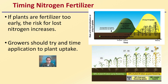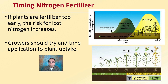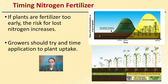To reduce the waste of nitrogen fertilizer, growers should work on the timing of fertilizer application. If plants are fertilized too early, the risk of lost nitrogen increases. Growers should try to time the application with plant uptake demand. Using corn as an example: 37% of nitrogen is taken up by post-flowering and 66% by the flowering phase. Fertilizing a little later in the growth cycle — when demand is higher — allows soil nitrogen to be taken up by the plant at greater efficiency.